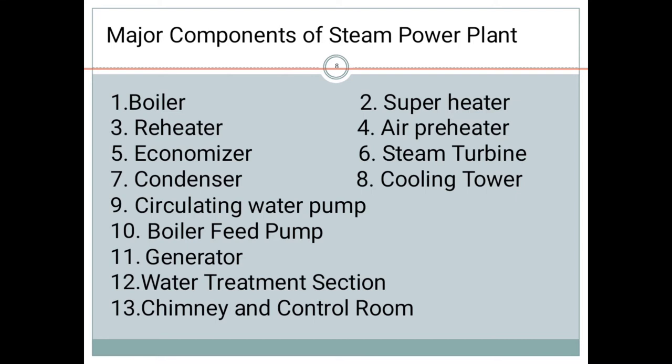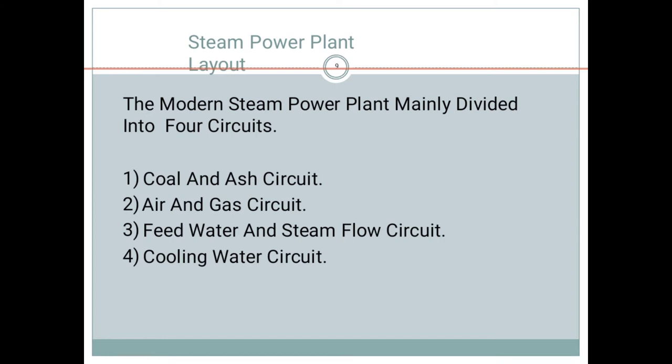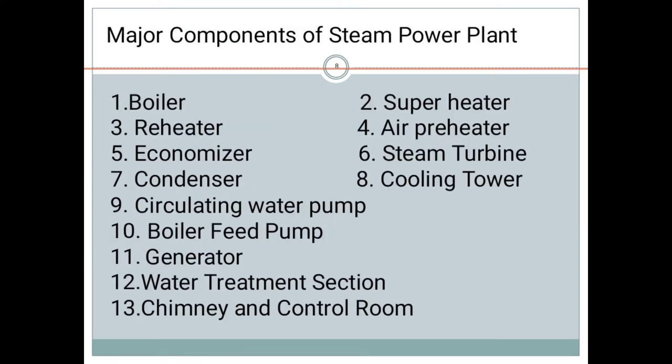Now, we will learn how it is working. Steam power plant having four circuits. One is coal and ash circuit, air and gas circuit, feed water and steam flow circuit, and fourth one is cooling water circuit. Now, I will explain the each component working.